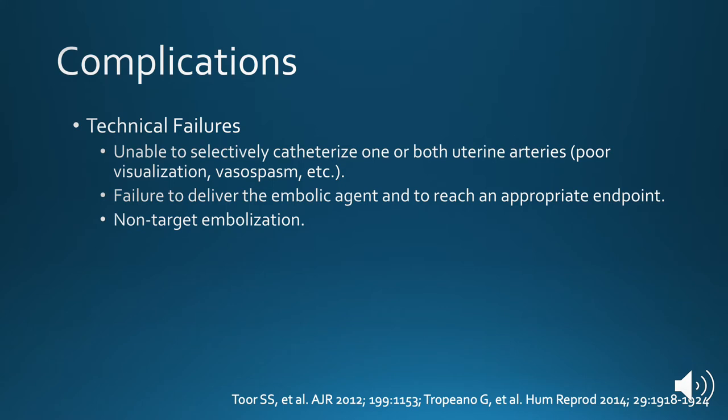Some of the statistics include a readmission rate of 2.7%, a major complication rate of 2.9%, and a hysterectomy rate due to a complication of less than 1%. Technical failures have been reported during the procedure, including an inability to selectively catheterize one or both uterine arteries. This can occur due to poor visualization, vasospasm, or several other causes. You can have a failure to deliver the embolic agent and to reach an appropriate endpoint, potentially due to catheter-related issues or spasm as well. And finally, non-target embolization can occur during this procedure.